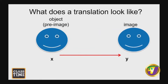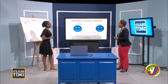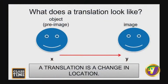He moved! He moved from location X to location Y. And when we look at it, we realize that the size of Mr. Smiley Face did not change. Before this movement took place, we refer to it as the object or pre-image, and afterwards we call it our image. So a translation is a change in location — and he's still smiling, still the same size. He has not changed.